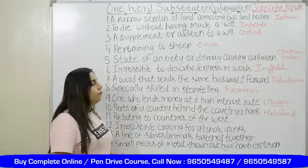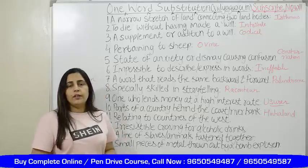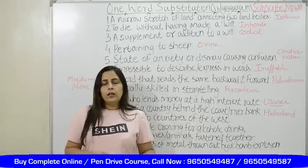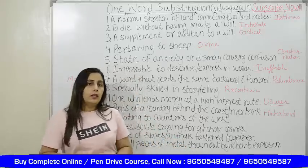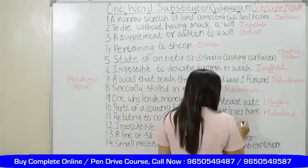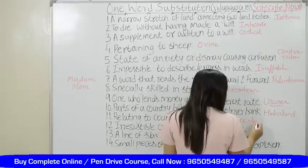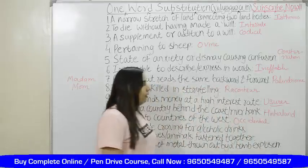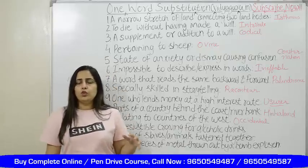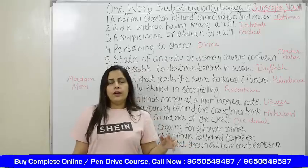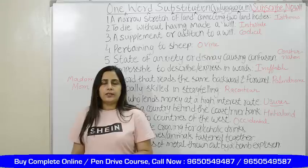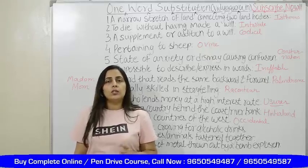Relating to countries of the west — something related to America, something related to Europe — that can be called occidental. The word you know is 'accidental'; I am just removing the 'a' from there and making it occidental. Occidental means pertaining to the west — even the persons who belong to the west, everything that pertains to the western countries, that is known as occidental.